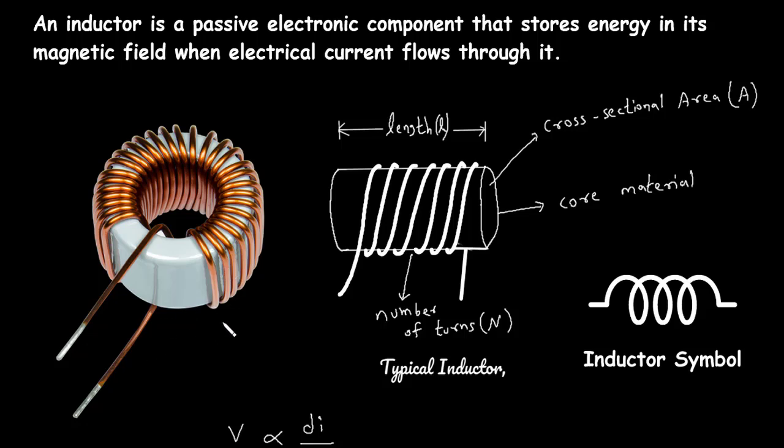Here this is a typical inductor. This is the length of this inductor. These are the number of turns which is represented by capital N. This is the cross sectional area and this is core material. Here this is the symbol for inductor.